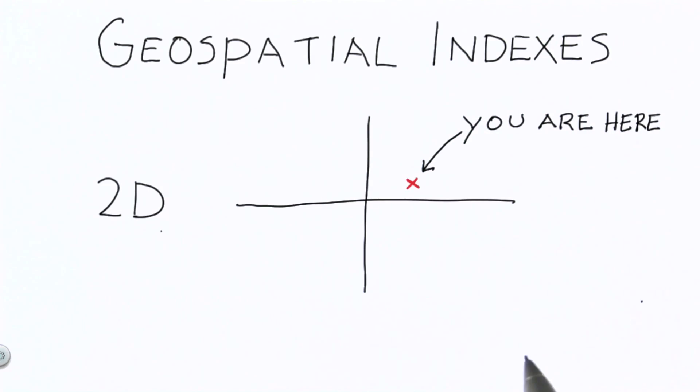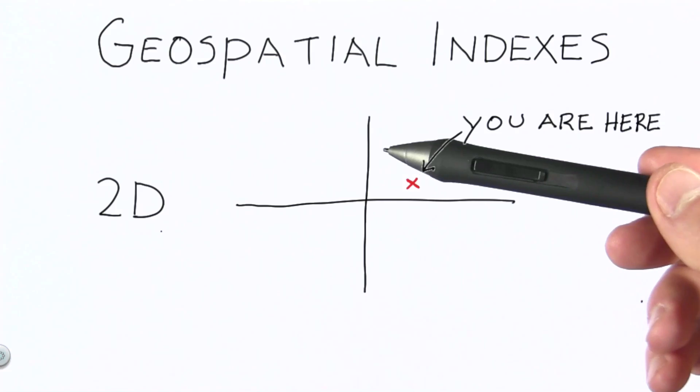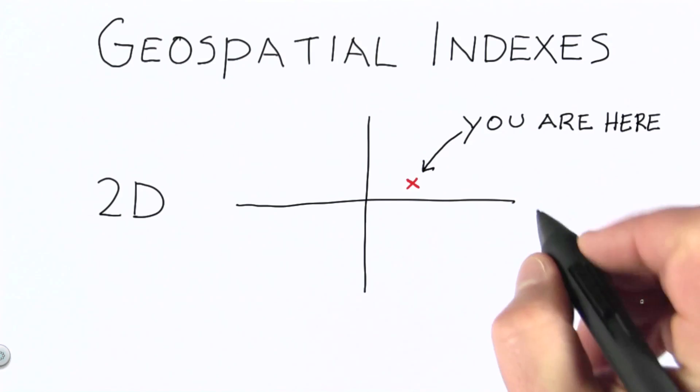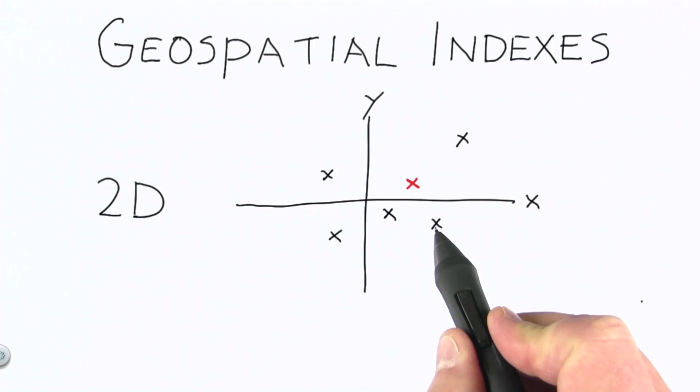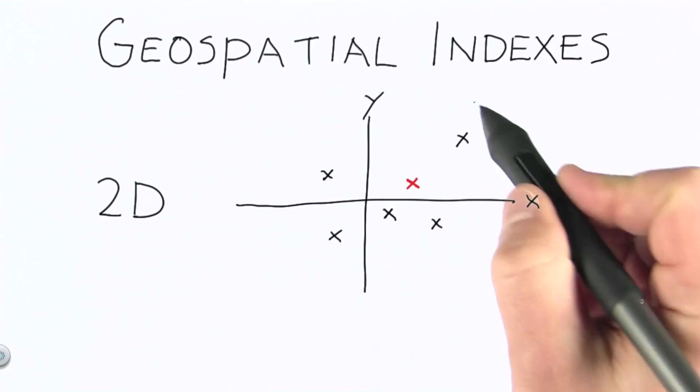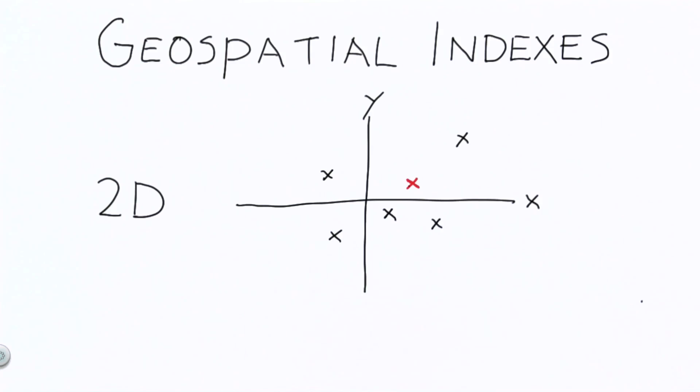With 2D geospatial indexes, we're essentially thinking of our data as all lying on a Cartesian plane, with values in the x direction and the y direction. In these situations, we have a query location of some kind, and what we want to find in response to queries are other items or documents that are close to this query location.